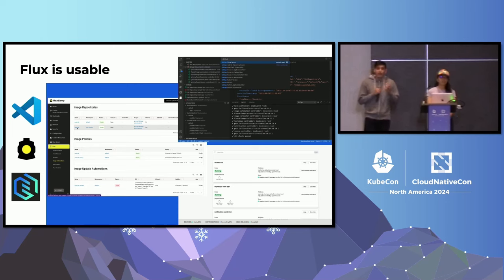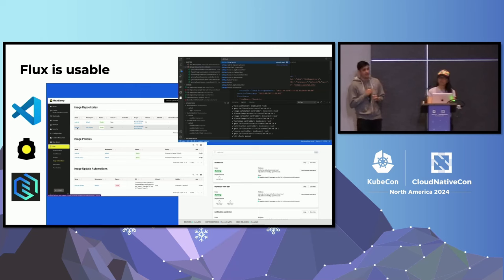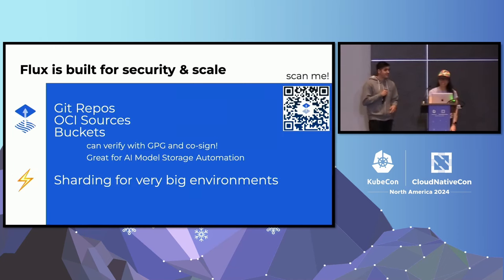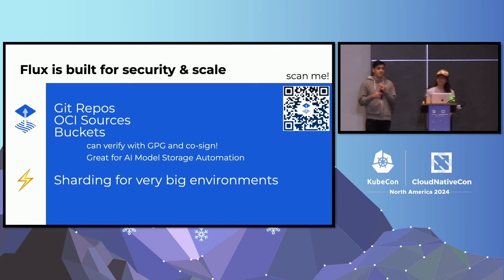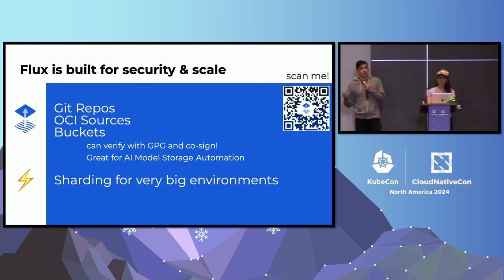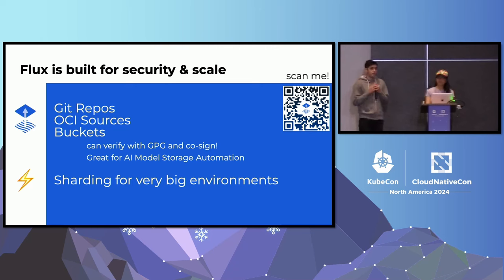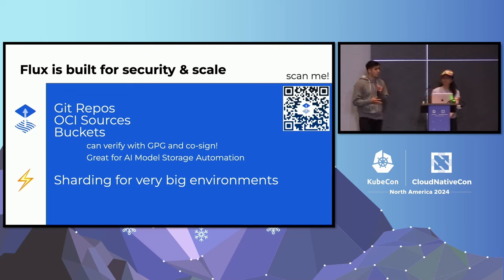Flux is very usable. We have the VS Code extension, which is my favorite way to do GitOps, right in my source code with my desired state. We also have the Headlamp team, who's built a plug-in for Flux, and Gimlet has the Capacitor UI. Flux is built for security and scale — multiple kinds of resource types that can all be signed by GPG keys or using the Cosign project. The OCI sources are where your Helm repos are. You can also put AI models in there, so you can use Flux's image update and automation controllers to do AI model and storage automation. Because Flux is multi-controller, you can shard the controllers and scale them for very big environments, which is why so many big customers, users, and companies use Flux for their infrastructure.